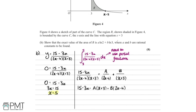To find B, we want to eliminate A by making the bracket x plus 3 equal zero. Let x equals minus 3: the left-hand side gives 15 minus 3 times minus 3, which is 24. The A bracket goes to zero, and 2 times minus 3 minus 4 gives minus 10. So 24 equals B times minus 10, therefore B equals minus 2.4.